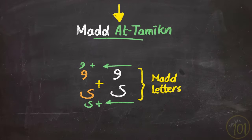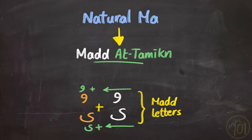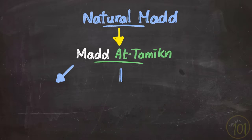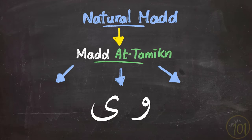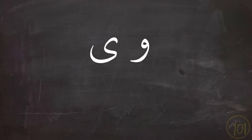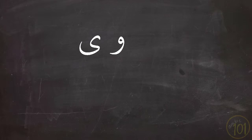So that they get their proper elongation in such situations. That's why مد التمكين is essentially a type of natural مد or المد الطبيعي, and it occurs according to three rules. All of which involve the two letters وو and يا.